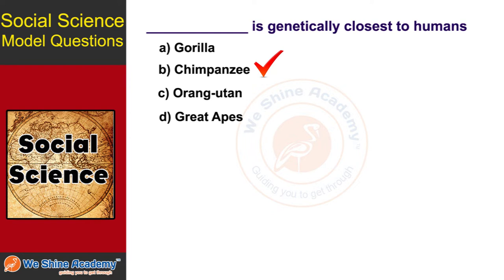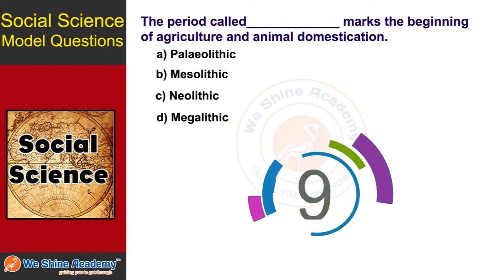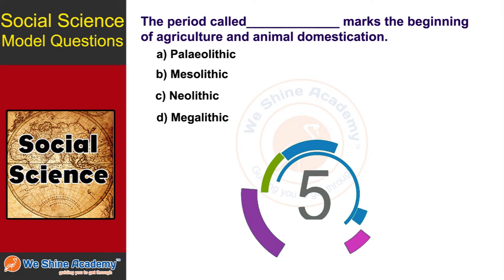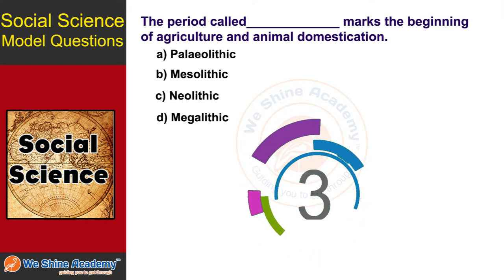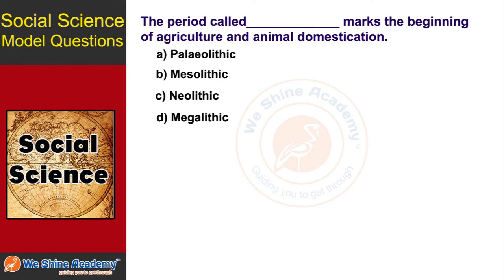The next question is: the period that marks the beginning of agriculture and animal domestication is called what? You have 10 seconds to find out. The answer is Option C, Neolithic.